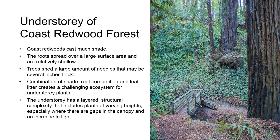The dense canopy of the redwood trees intercepts most of the incoming solar radiation, and the resulting shade in the understory limits the light-dependent process of photosynthesis for plants in this habitat. Less photosynthesis means plants have less energy for growth and reproduction. Redwood trees also shed copious amounts of needles, creating acidic leaf litter that can be several inches thick. The combination of shade, leaf litter, and root competition from the trees creates a challenging environment for the understory plants.